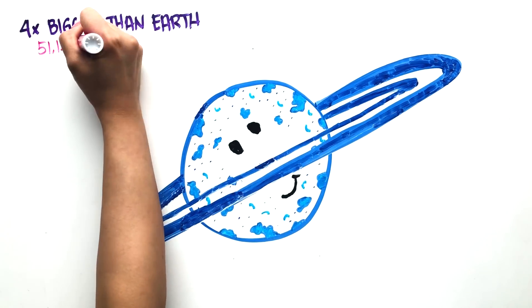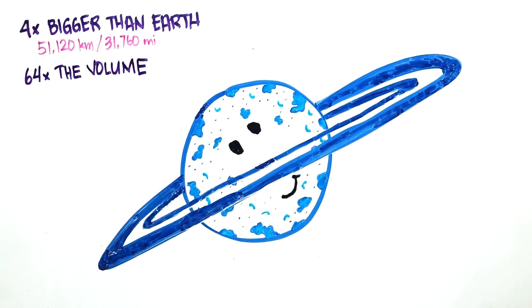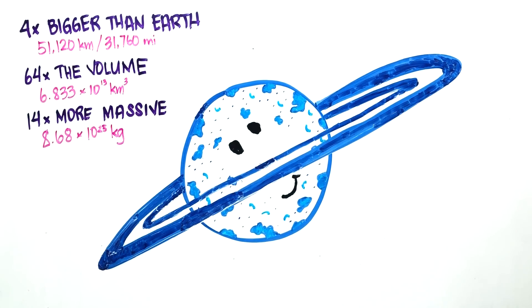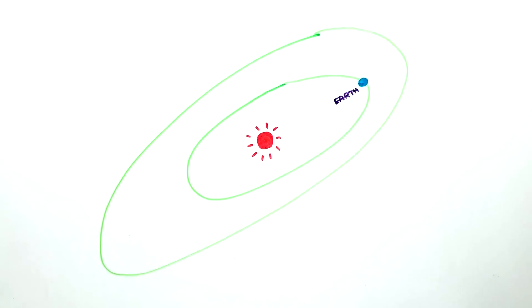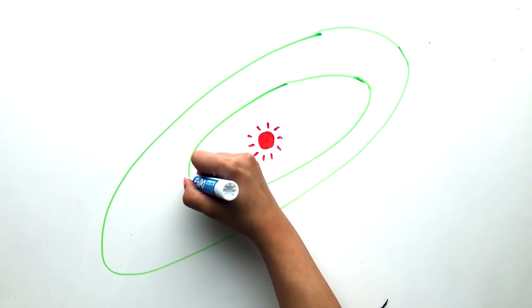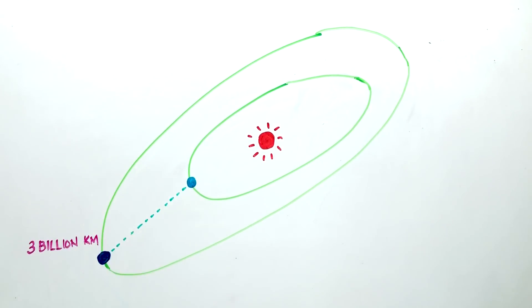It has four times the diameter of Earth, 64 times the volume, and more than 14 times the mass of our planet. At its closest, Uranus is 2.74 billion kilometers from Earth, and at its farthest, it's 3 billion kilometers away.